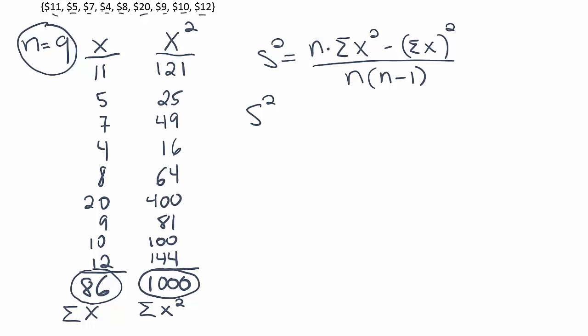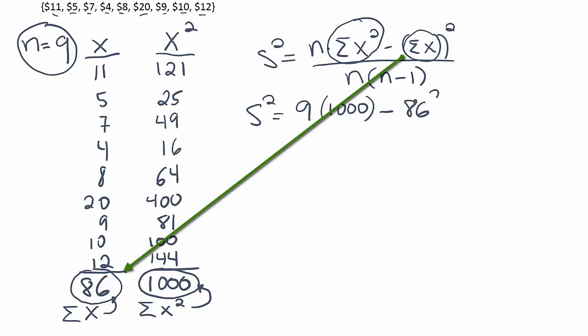So s squared will be equal to 9 times this number. Do we know what this number is? Sure. The sum of x squared is 1000, we said, right? We said that that was just 1000. Minus the sum of x squared. Do we know the sum of x? I think we do. We said that it was 86. So we'll have 86 squared divided by n, which was 9, times n minus 1, which is just 8.